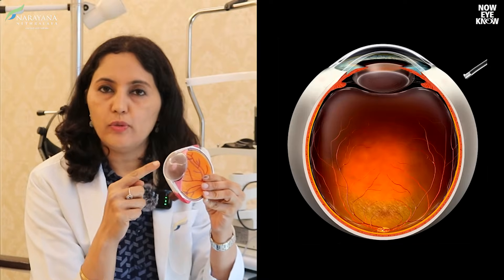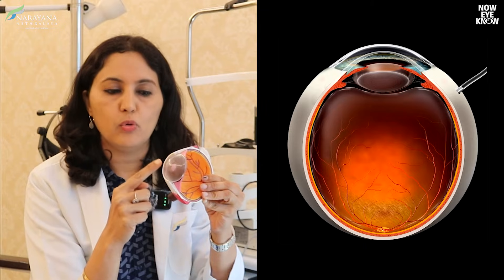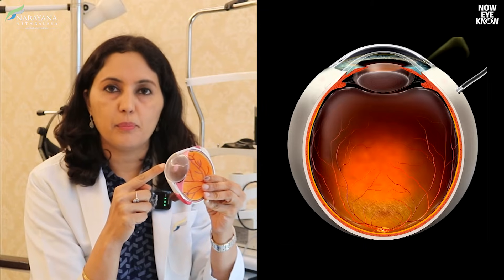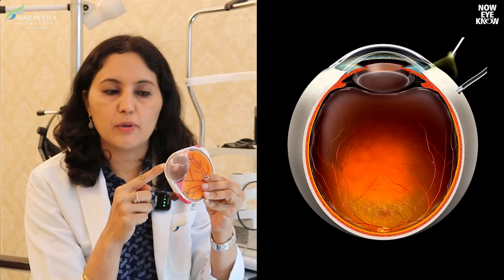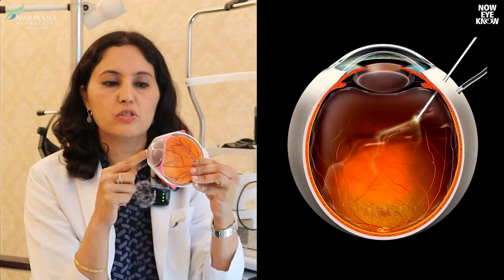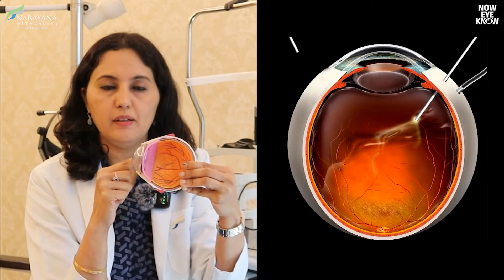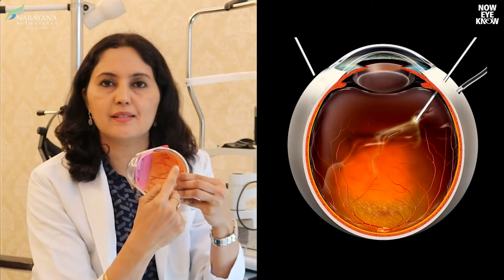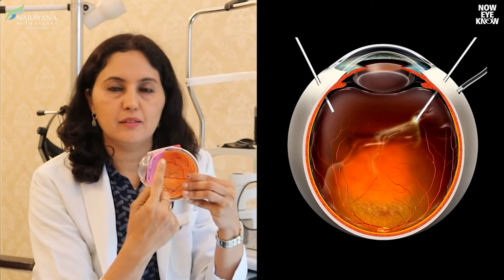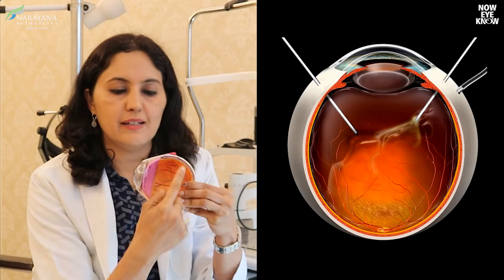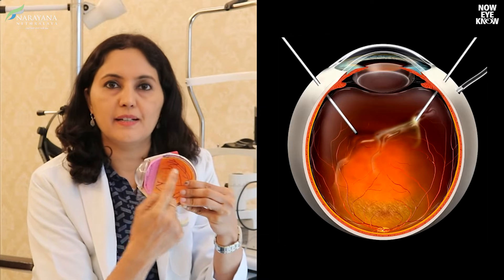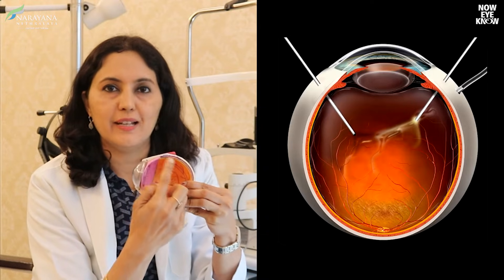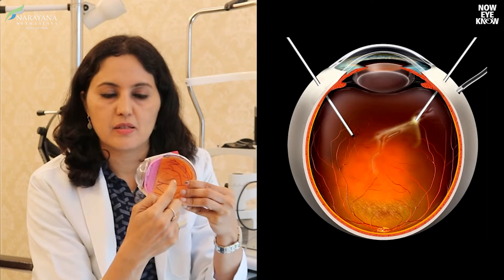We go a little more posterior because we want to reach the posterior chamber — that is the back side of your eye. This is the vitreous cavity, which appears blank here but is filled with a jelly substance called the vitreous.